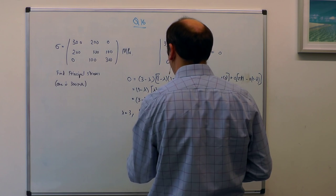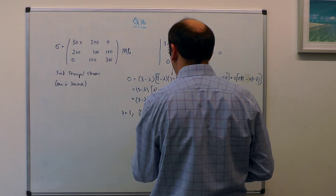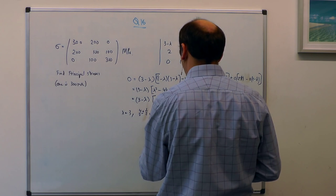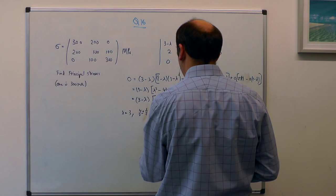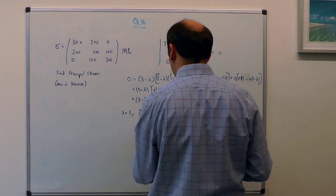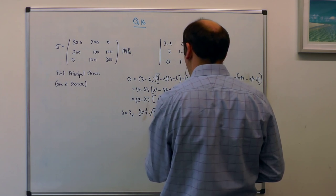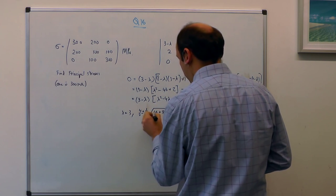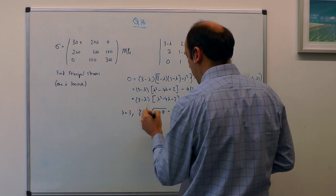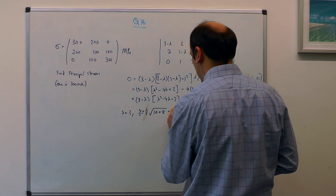plus minus half the square root of b squared, which is 16, minus 4ac, which is 2 times 4, which is 8. So that's 2 plus minus root 24, bring the half in, so that's root 24 divided by 6, root 6.